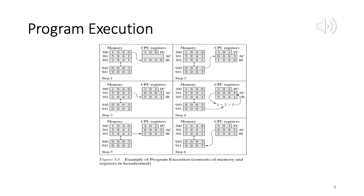To summarize: PC contains the memory address of the next instruction — we visit sequential memory locations, grab the instructions, copy them to the instruction register, and execute them one at a time. PC, IR, and the accumulator register all play key roles. Instructions are located at addresses 300, 301, and 302; data is located at addresses 940 and 941.